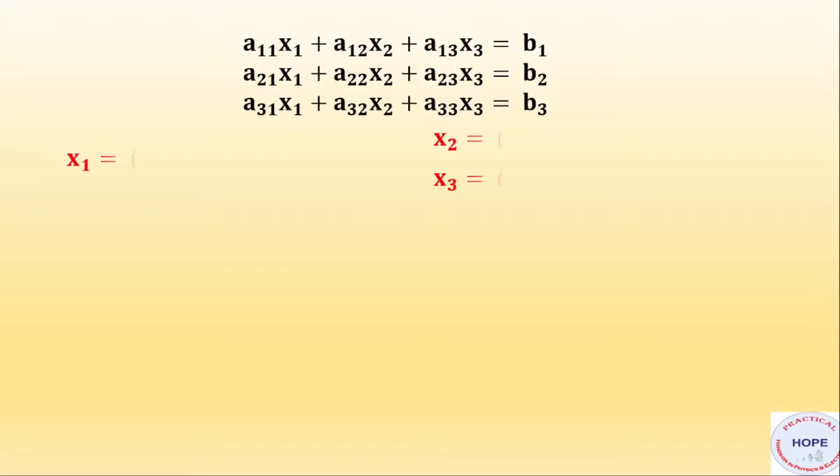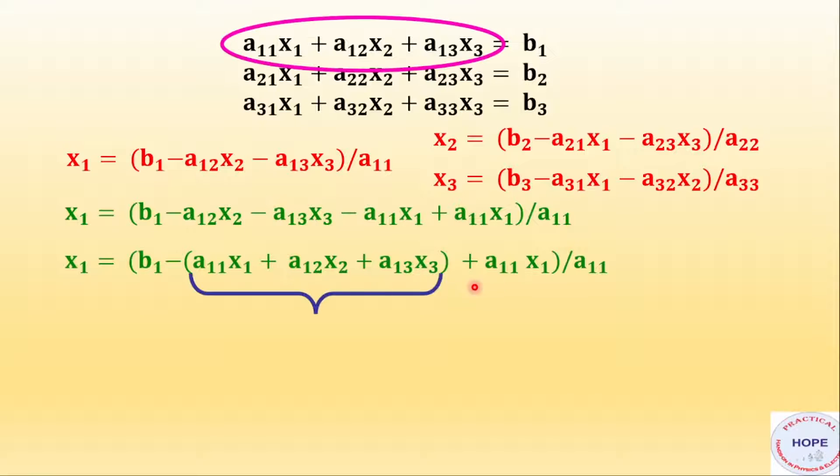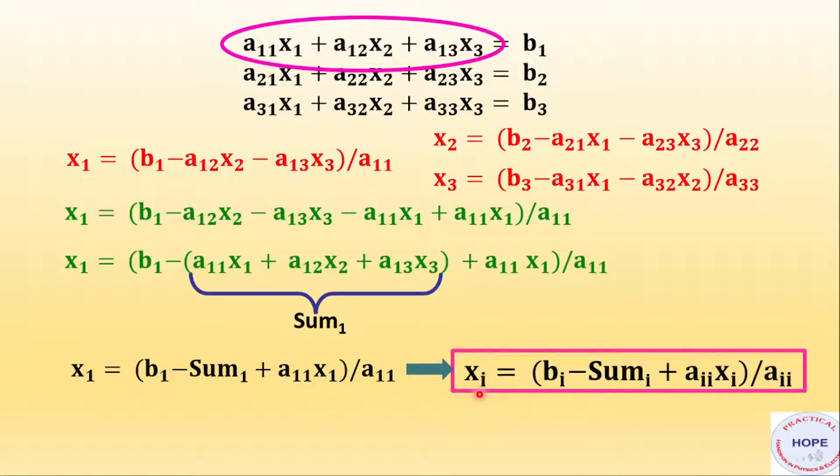Say these are the set of equations and these are the three equations to find x1, x2 and x3. Take the case of x1. Suppose we write x1 like this. We have added a11x1 and subtracted also. So effectively there will be no change. We can rearrange the terms like this and the sum of these three terms we are defining as sum1. That is the sum of these three terms of equation number 1. We can write x1 like this. Now this equation can be written in general like this. You can see we can calculate any variable using this general expression.